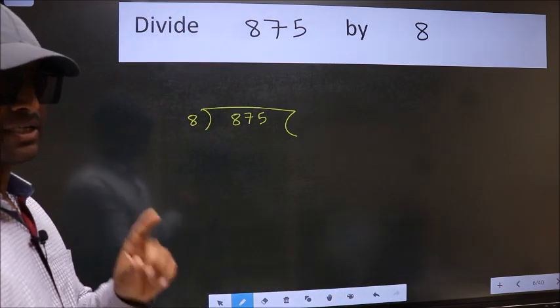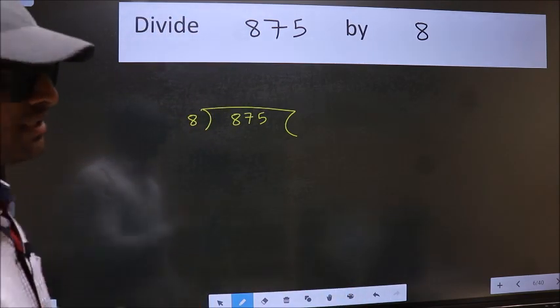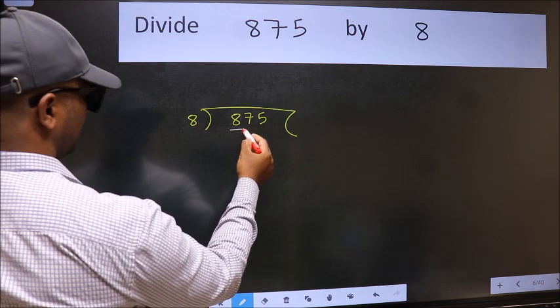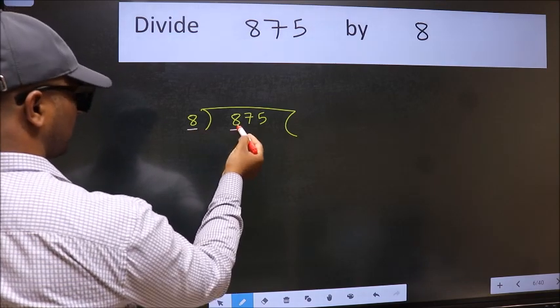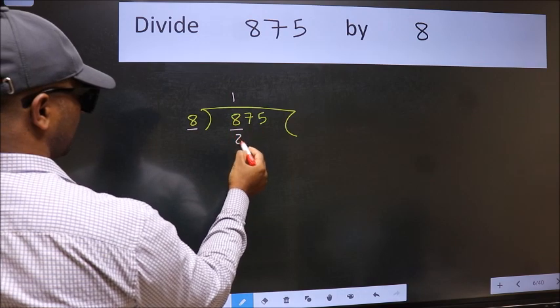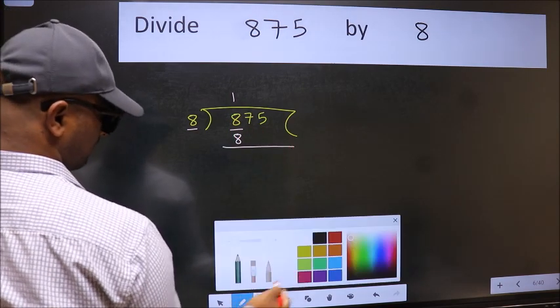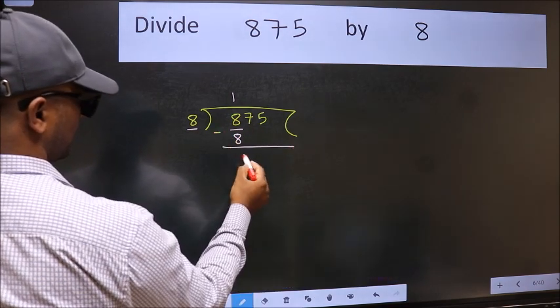This is your step 1. Next, here we have 8 and here 8. When do we get 8 in the 8 table? 8 ones is 8. Now we should subtract. We get 0.